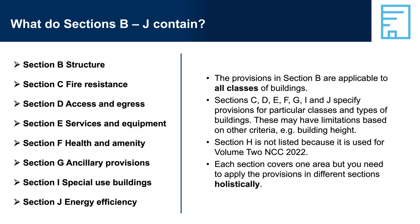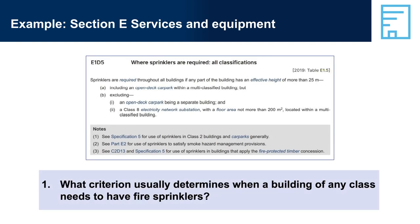Check each section to make sure you understand how it is organised. Example — Section E Services and Equipment, Question 1: What criterion usually determines when a building of any class needs to have fire sprinklers? One trigger for when a building is required to have fire sprinklers installed is when the building has an effective height of more than 25 metres. Effective height means that any part of the building is above that height. However, subsequent clauses including E1D6 to E1D13 may also have other triggers for fire sprinklers, additional requirements or exclusions.